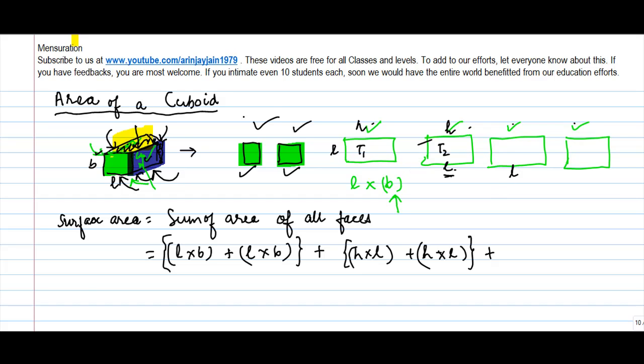Because if you see, otherwise this will not be a cuboid. If it is a cuboid, then the length of this side and this side will be equal, so this is L, this is L.